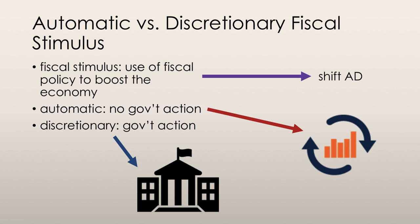Discretionary fiscal policy is the use of government policy to change aggregate demand, and I will get into more detail on that in a minute.